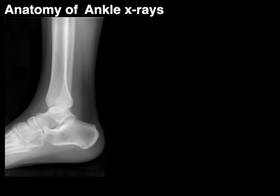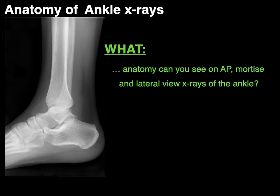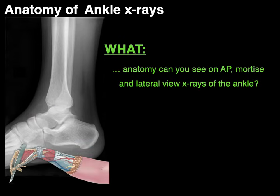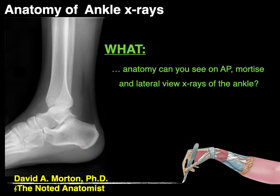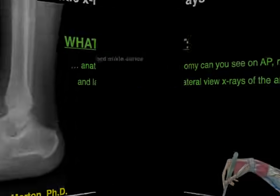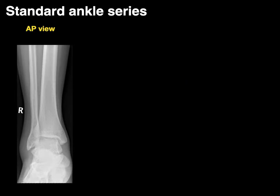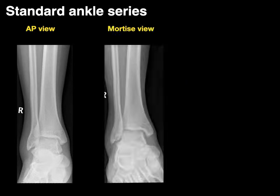We're going to talk about the anatomy of ankle x-rays and answer the question: what anatomy can you see on AP, mortise, and lateral view x-rays of the ankle? My name is Dr. Morton and I'm the noted anatomist. The standard ankle series we're going to go through are an AP view, a mortise view, which I'll explain about more later, and a lateral view.